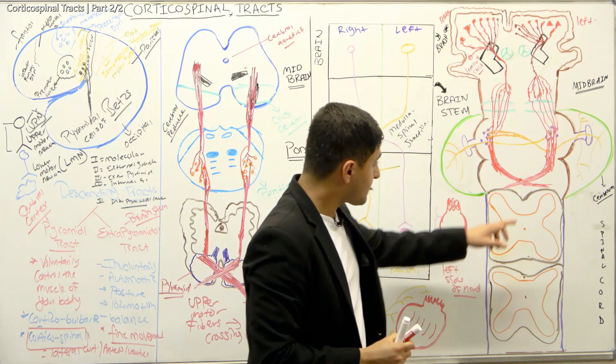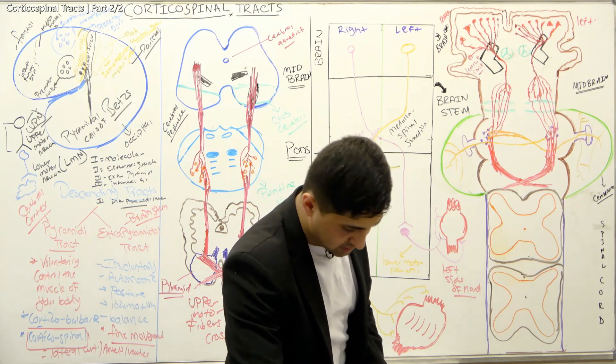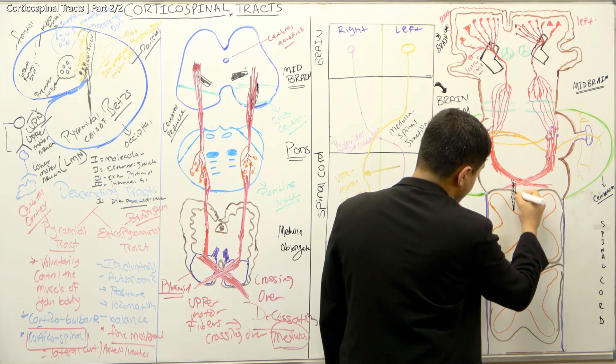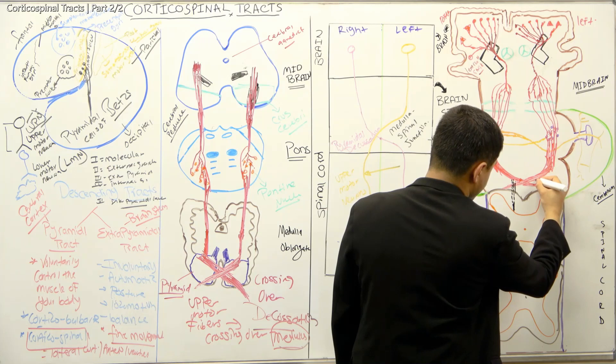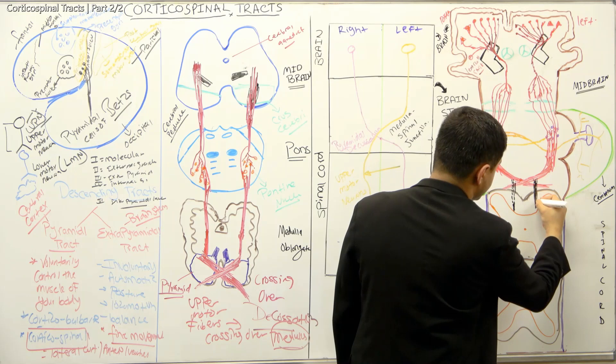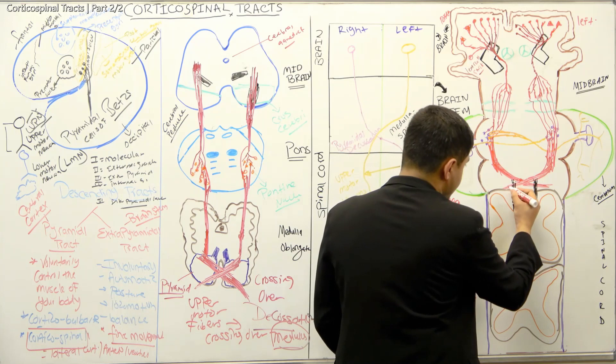When they do cross over, about 80 to 90 percent of the fibers decussate. But some fibers — about 10 to 15 percent — go anteriorly and don't cross over. The majority of the fibers do cross over, but a minority descend anteriorly without crossing.